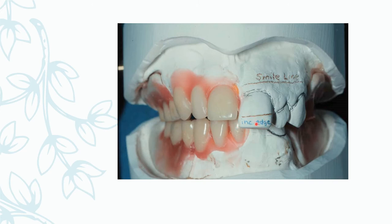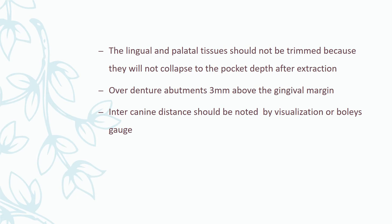In the try-in, mark the smile line and the incisal edge position where extraction will take place. Check that lines are coinciding properly with actual standards. The lingual and palatal tissue should be trimmed because they will collapse to pocket depth after extraction, so these have to be trimmed off.